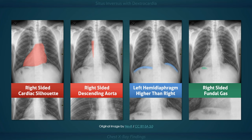In patients with situs inversus totalis, you would expect to see a right-sided cardiac silhouette, descending aorta, and gastric air bubble, while the left hemidiaphragm will be higher than the right.